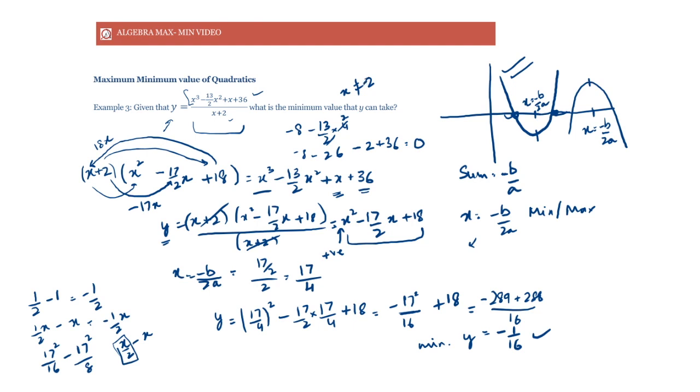Note: x should not be equal to -2 (not 2), because x+2 appears in the denominator and would make the expression undefined. The quadratic ax²+bx+c is upward-opening when a > 0 (giving a minimum) and downward-opening when a < 0 (giving a maximum), with the extremum occurring at x = -b/2a.